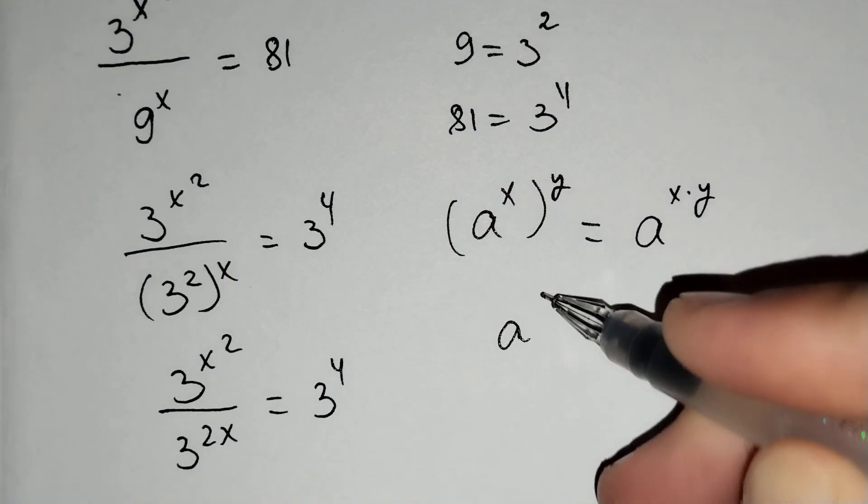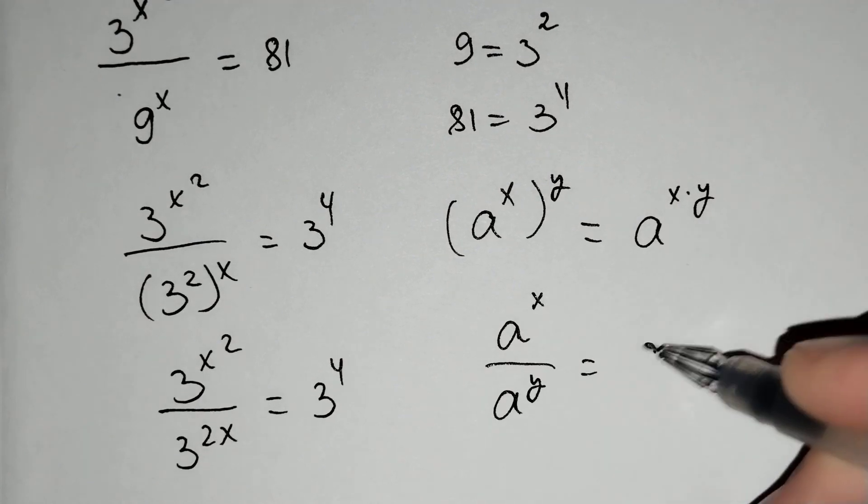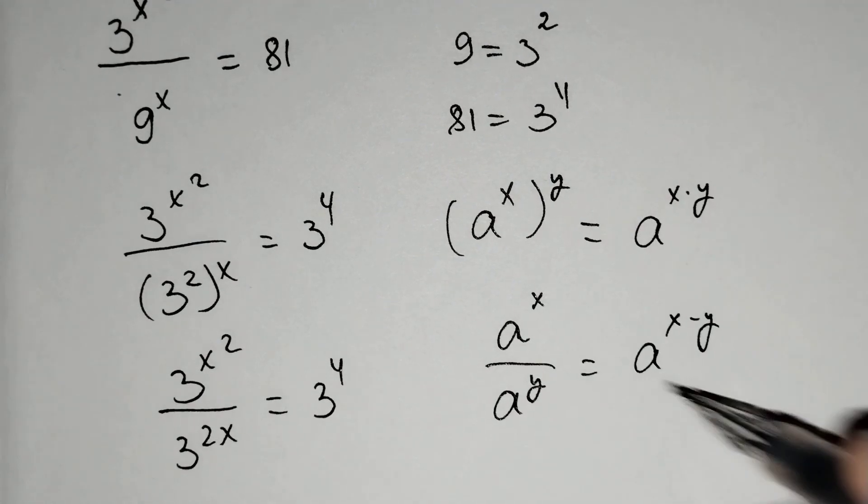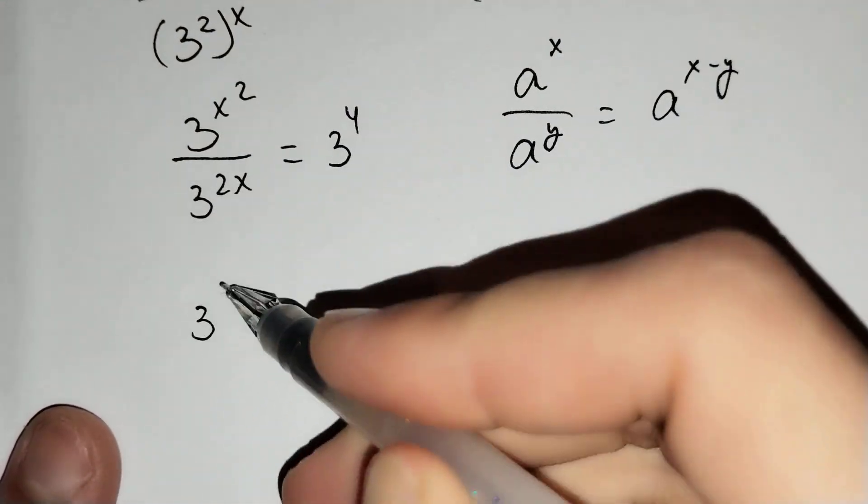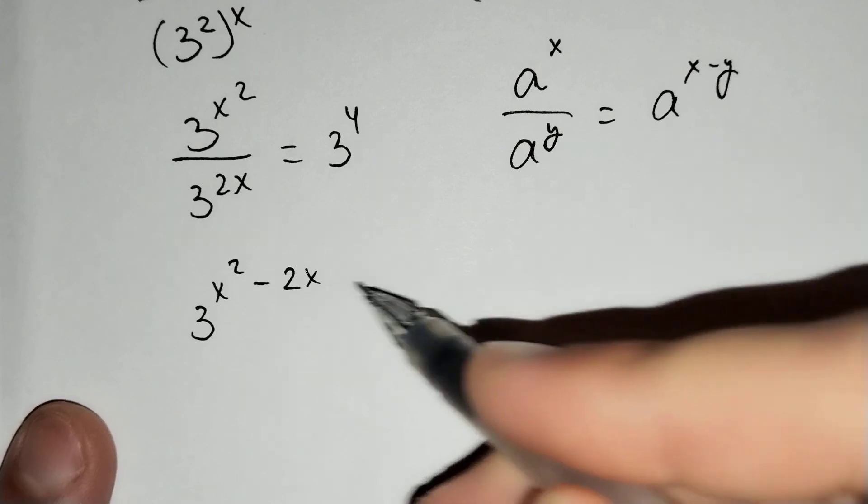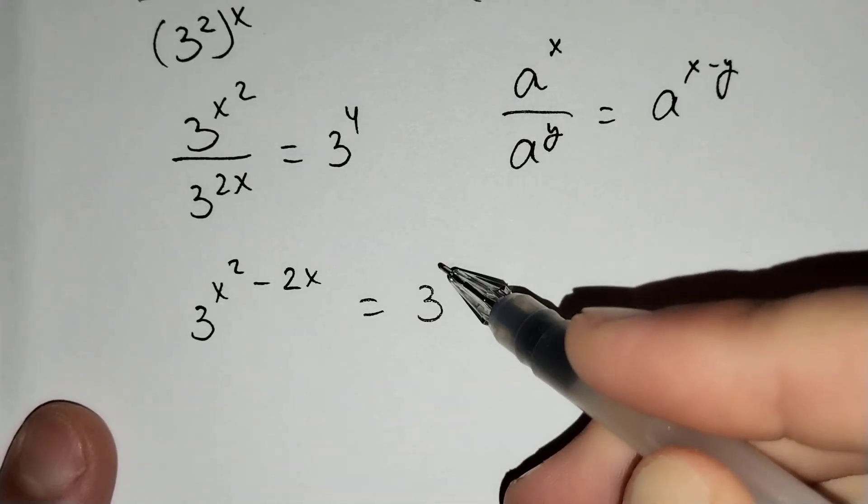Then a power x over a power y equals a power x minus y. For this formula, the left side equals 3 power x squared minus 2x equals 3 power 4.